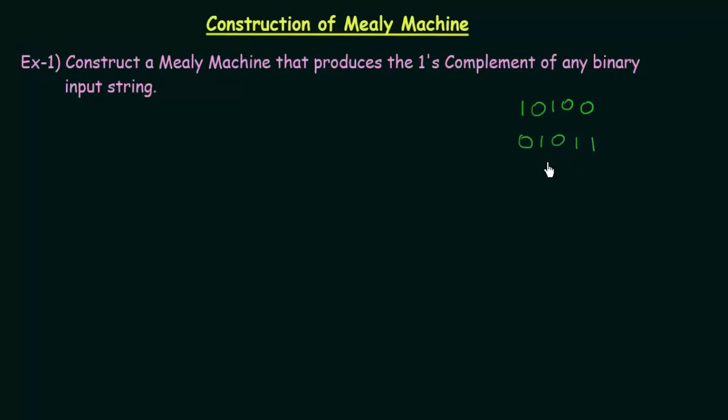How do we do this? It is very simple. I start with a state which I will call A, which is my starting state. A on getting input 0 should give the output 1, and A on getting input 1 should give the output 0. Whenever you see 0 you give the output as 1, and whenever you see 1 you give the output as 0. That will give you the one's complement. It is very simple and it can be achieved just by using one state.